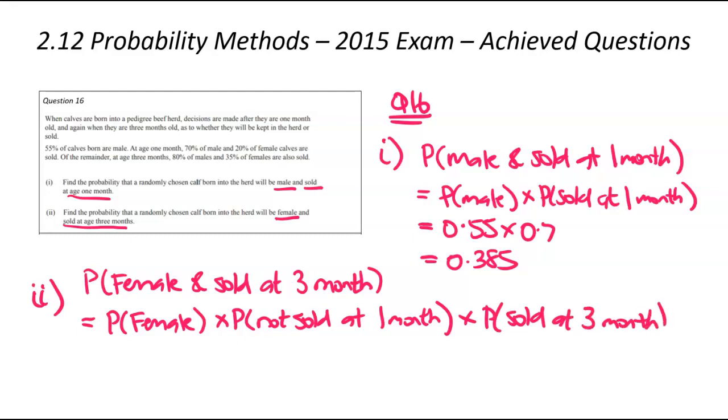We need the probability of it being a female times the probability of not sold at the first month times the probability of sold at the third month. Very tricky question. That middle part there was a bit hard to pick up. You really have to understand and think about the context to get that one.